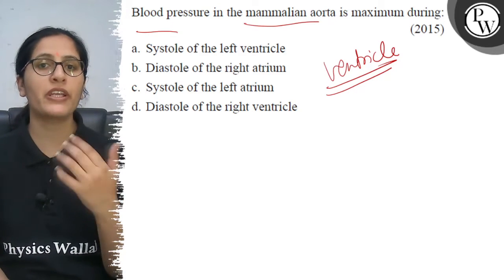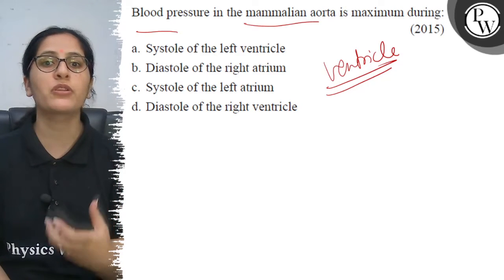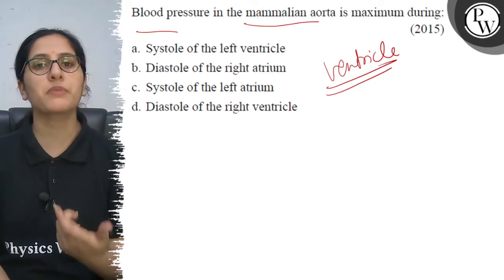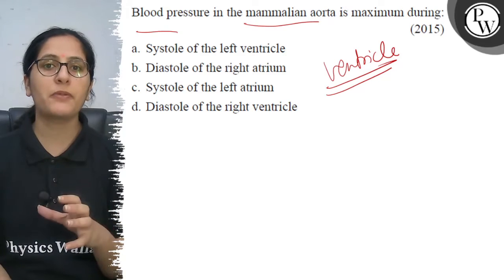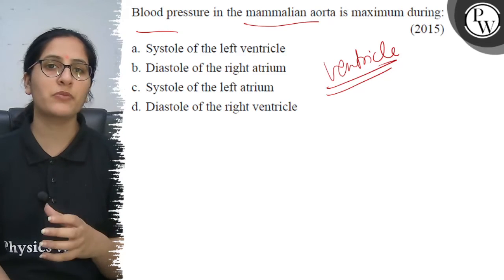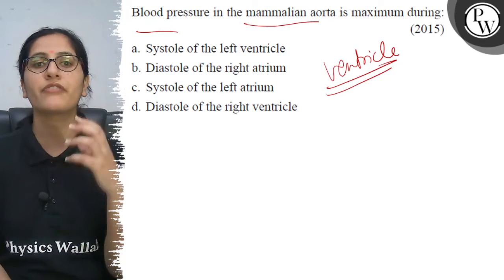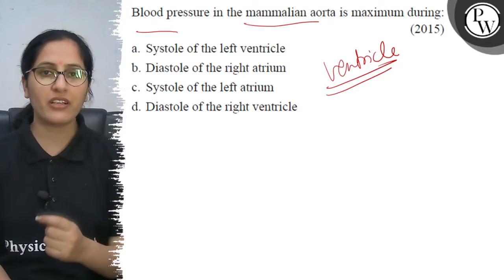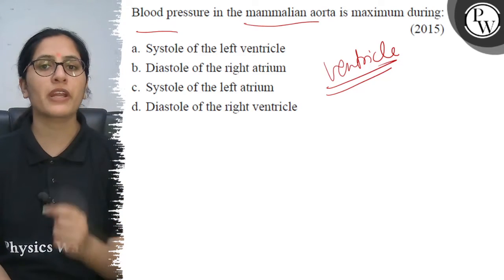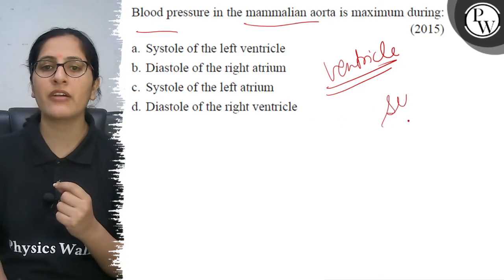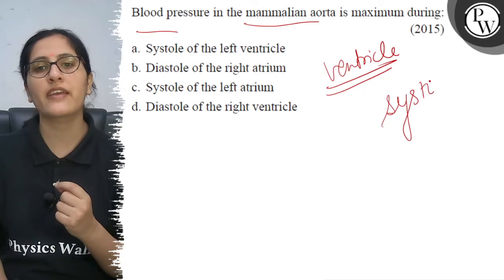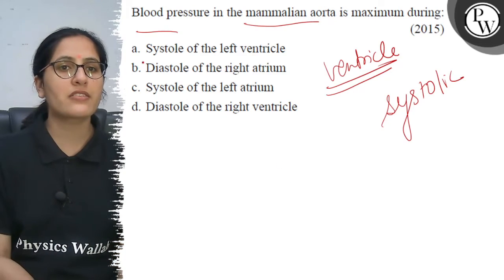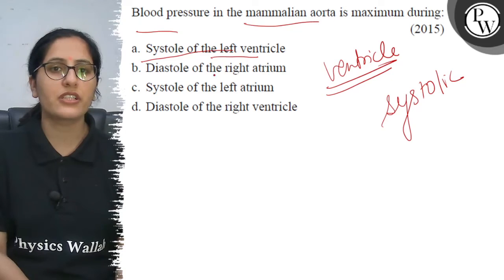The pulmonary artery and aorta valves, which are the semilunar valves, will open. So blood pressure is maximum when the ventricle is in the contraction stage. We use the word systole for contraction of the left ventricle.